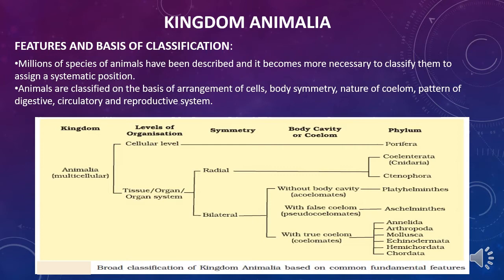Animals are classified on the basis of arrangement of cells, body symmetry, nature of coelom, pattern of digestive, circulatory, and reproductive systems. This flowchart shows how the animal kingdom has been classified based on these features.